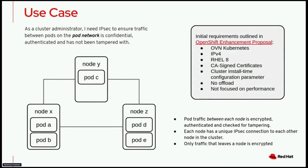So if we look at this diagram here, which is a diagram of a three-node OpenShift cluster, we have three nodes — node X, node Y, and node Z — and they're all interconnected on an underlay network. So every node has a connection to every other node on the network.